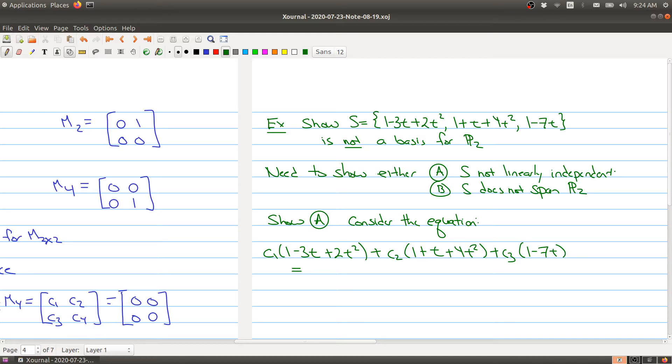And what I'm going to do is I'm just going to show A. So we're going to show A. And what we want to do is show that we can get a non-trivial solution if I'm setting this guy equal to zero. So let me just kind of expand this out. So we have c1 plus c2 plus c3. Those are all the constant terms. And then the coefficient of t is minus 3c1 plus c2 minus 7c3 times t.